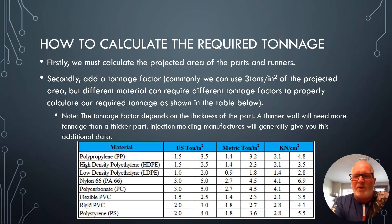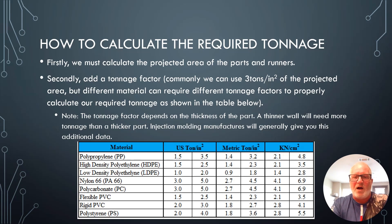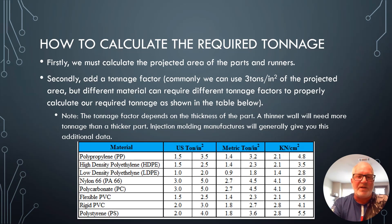To calculate the required tonnage, first calculate the projected area of the part and runner. Second, apply a tonnage factor — commonly three tons per square inch of projected area. Different materials can require different tonnage factors to properly calculate the required tonnage, as shown in the table.